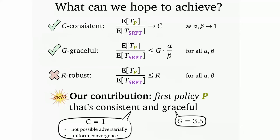If we had full knowledge, Shortest Remaining Processing Time (SRPT) is optimal. So ideally we want consistency: as alpha and beta go to one — as estimates approach the true size — the ratio is bounded by some constant. We also considered robustness — always within some factor of SRPT for all alpha and beta — but we actually show that's impossible in this setting.